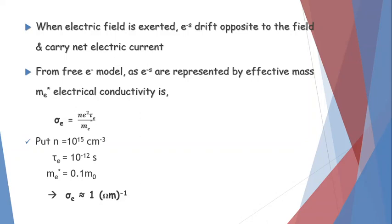This is a typical value of electrical conductivity in the case of semiconductors. Generally, for metals, electrical conductivity is of the order 10⁷ per ohm per meter. Even though σ_E for semiconductors is much smaller than for metals, it is still sufficiently large for practical applications. That is why semiconductors are very important materials for practical use.